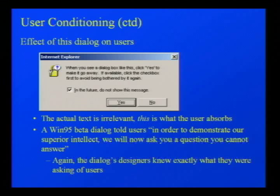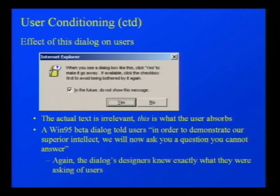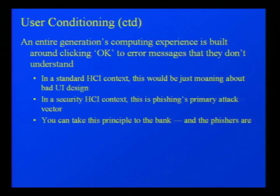That's a translation of what users actually absorb from the dialogue — essentially nothing. The Windows developers actually realized users wouldn't understand this. In Windows 95, one of the betas actually included an error message saying 'in order to demonstrate our superior intellect, we're going to ask you a question you can't answer.' So from the last ten years or so, we've got an entire generation whose computing experience is based around clicking OK to error messages they don't understand.